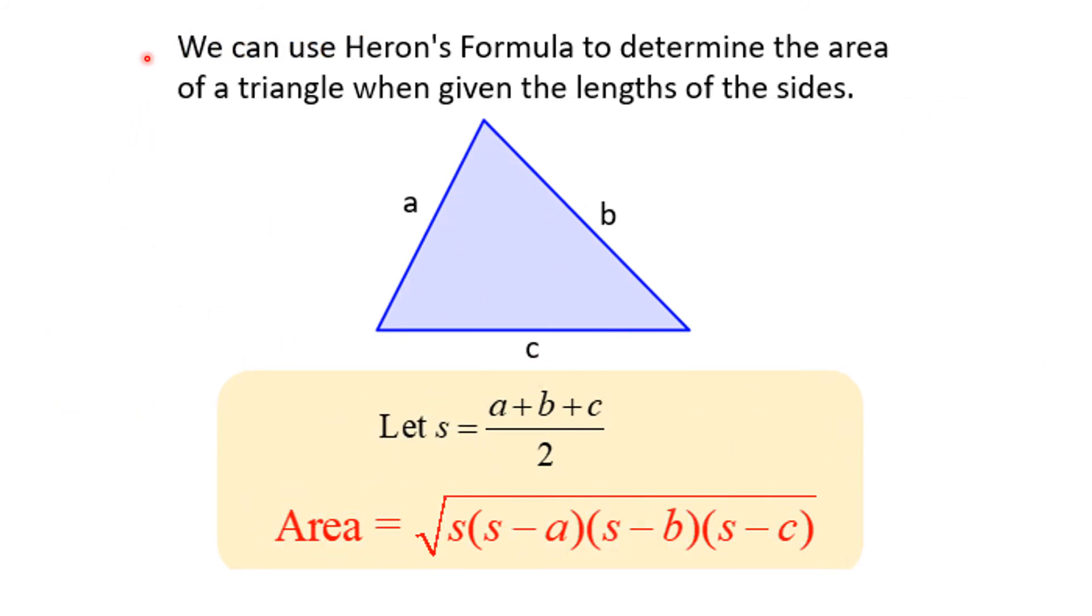We can use Heron's formula to determine the area of a triangle when given the lengths of its sides. Here you see a scalene triangle where all three sides have different lengths. The formula follows this way: if you let s equal the semi-perimeter, that is, add up the length of the sides and divide by 2, then the area can be found as the square root of s times (s minus a) times (s minus b) times (s minus c).